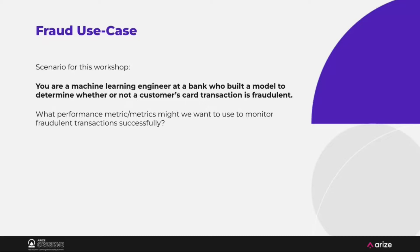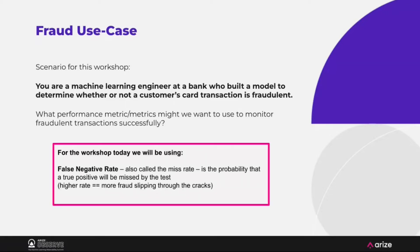For example, things like performance metrics around accuracy, precision, recall, F1 score, true positives, false positives. But for the sake of the workshop today, we're going to be focused around the false negative rate, also known as the miss rate. It's the probability that a true positive will be missed by the test — the higher your false negative rate, the more fraud is actually slipping through the cracks.